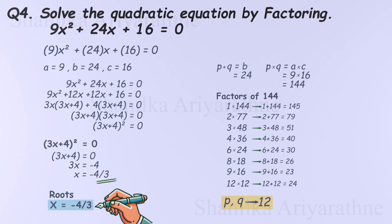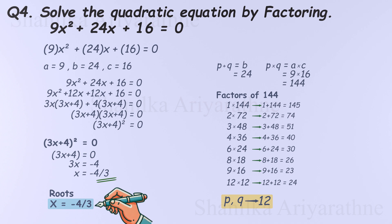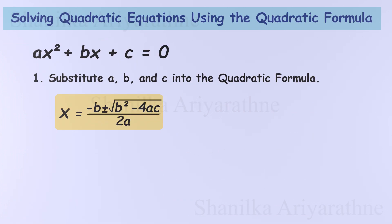Now you're familiar with solving quadratic equations by factoring. While this method is great when p and q are easy to find, some equations are trickier. For a universal method that works every time, let's explore the quadratic formula. Instead of hunting for the right numbers, we use a formula that directly gives us the solutions: x equals negative b plus or minus the square root of b-squared minus 4ac, all divided by 2a. It might look complicated at first, but once you get the hang of it, solving quadratics becomes super easy.